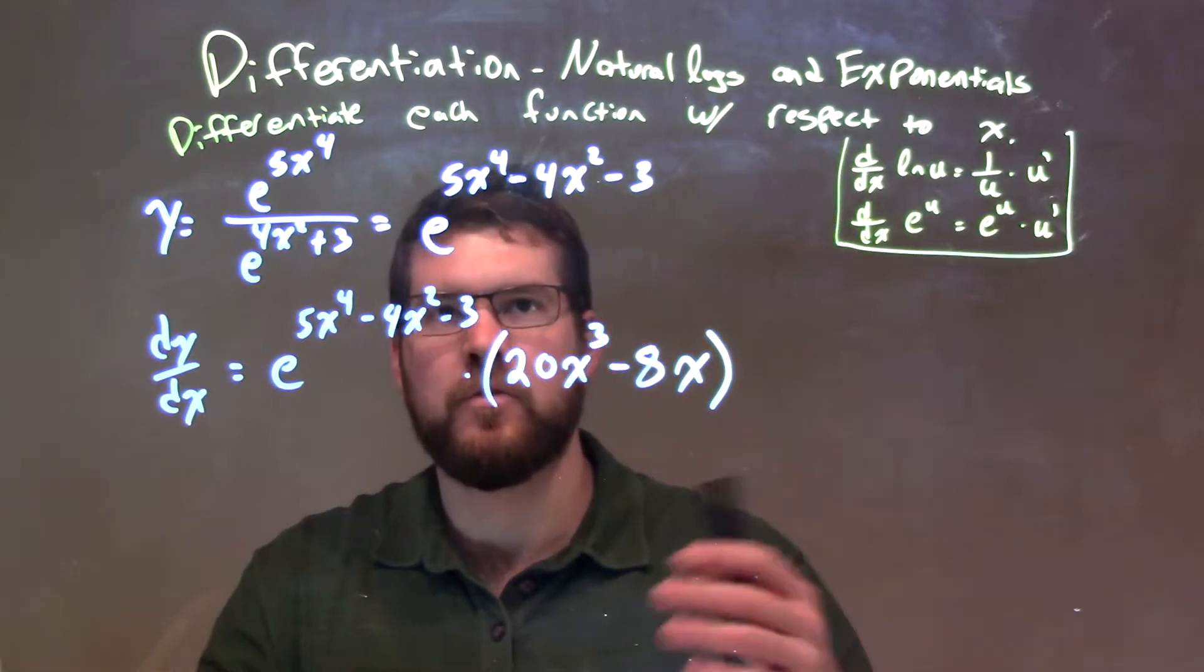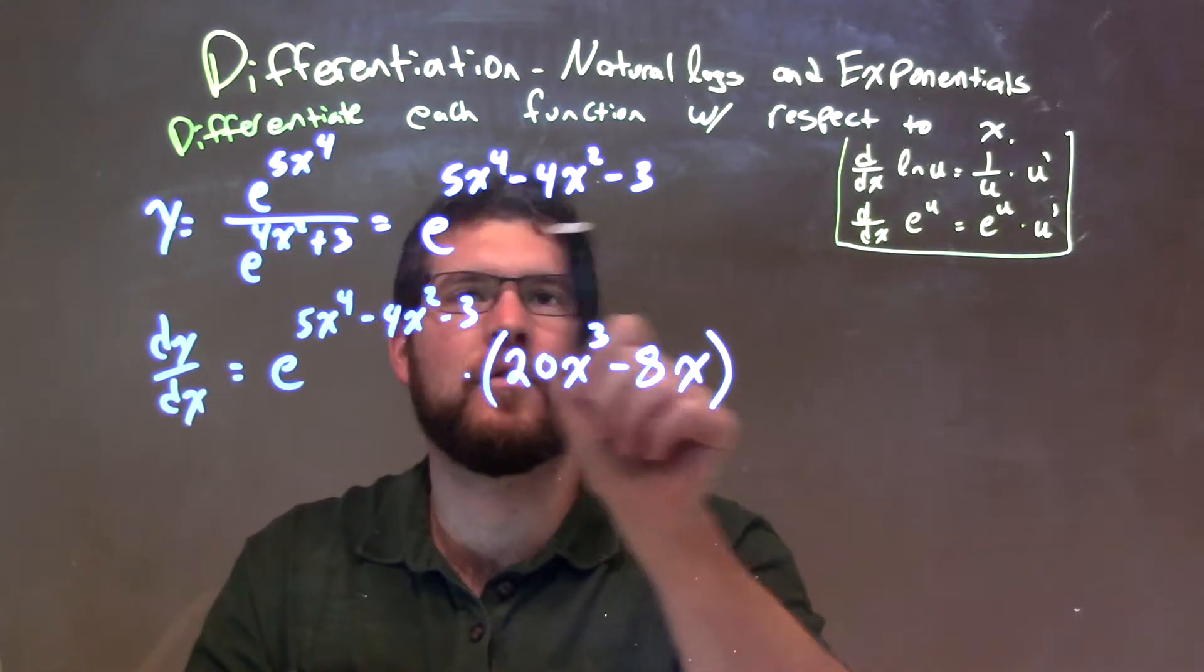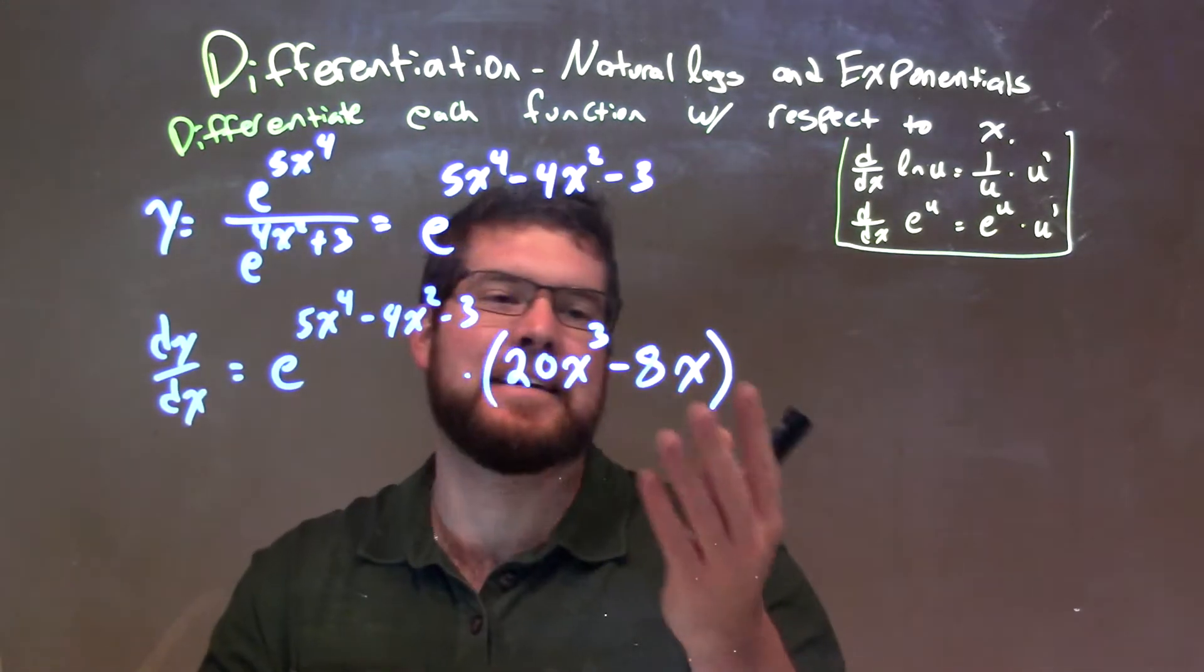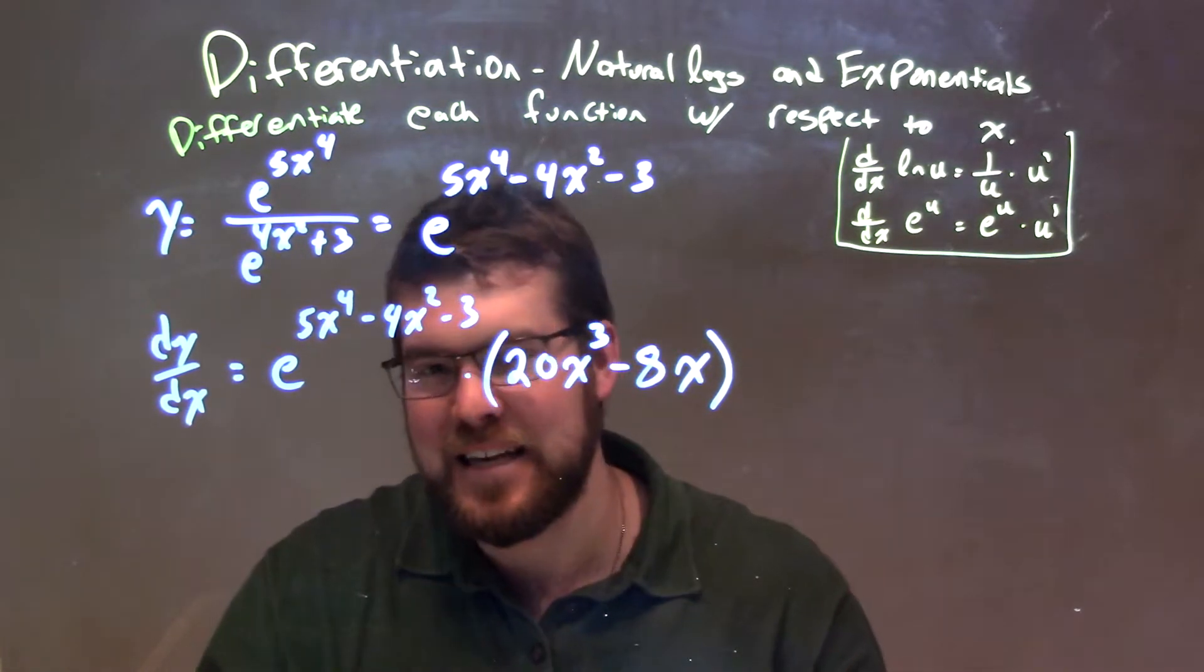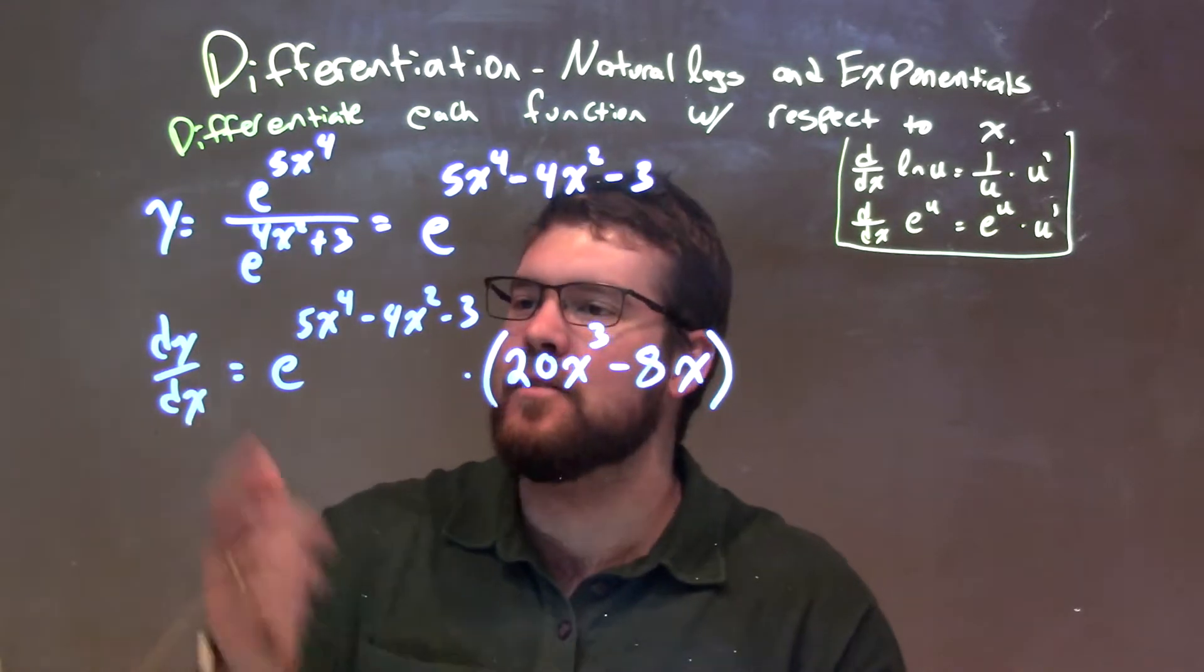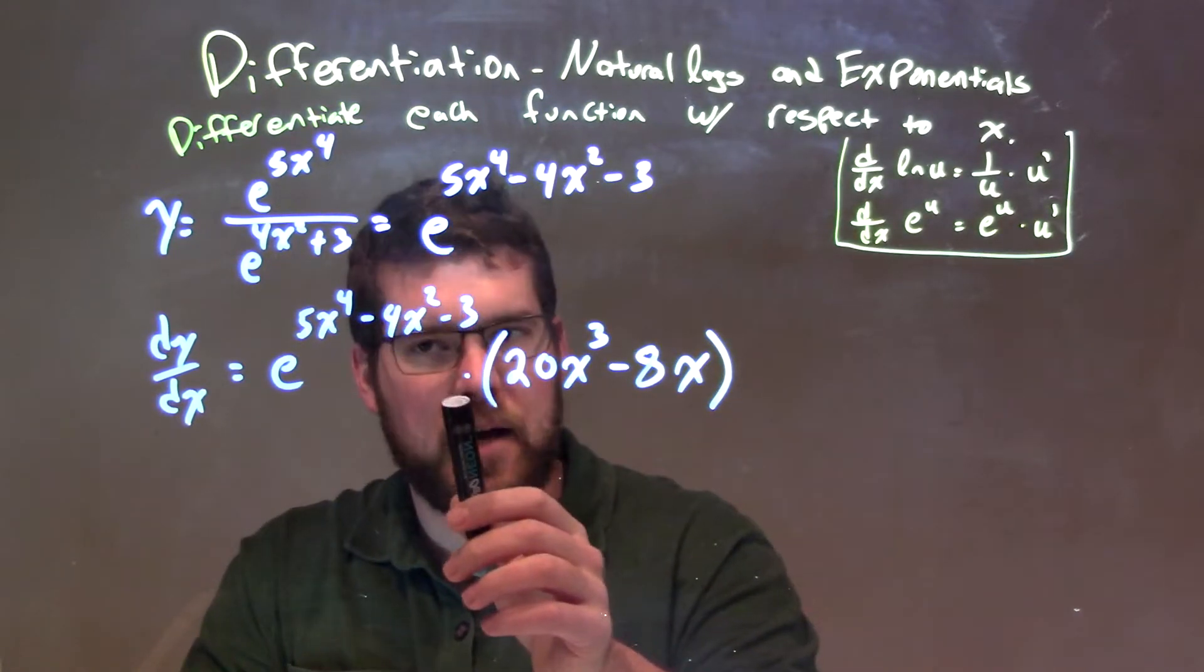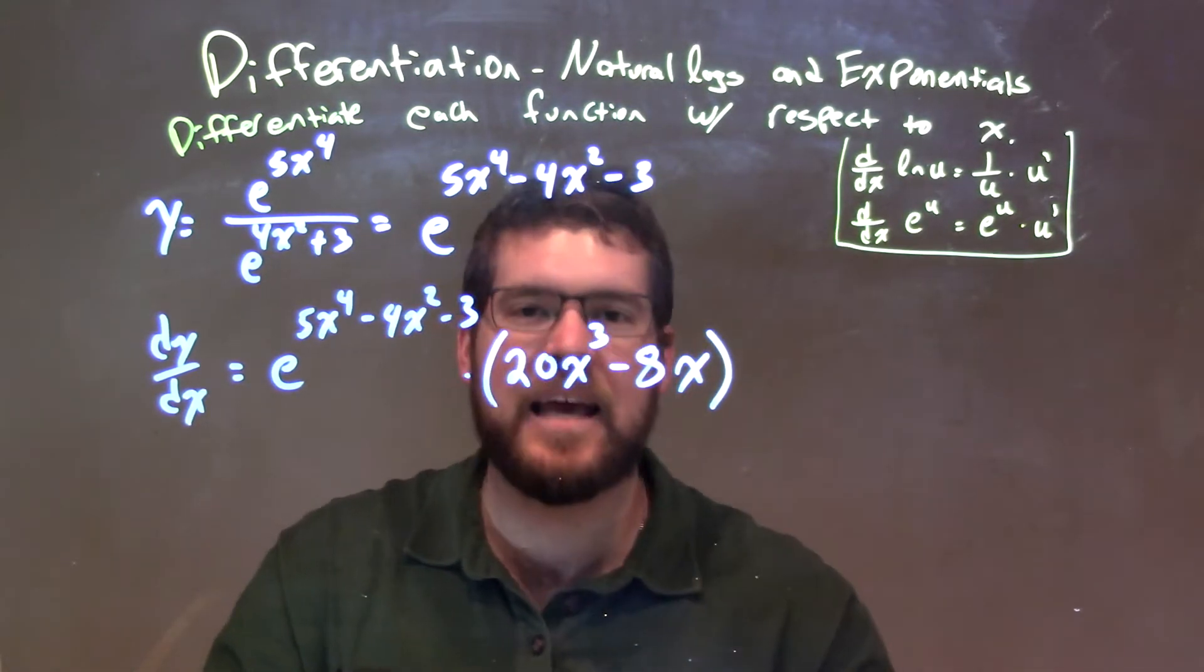Taking the derivative, derivative of e to the u is e to the u times u prime. So we keep it being the same. The derivative of our exponent was just 20x to the 3rd minus 8x. You can simplify this maybe a little more, factor out 4x and put it out front. I don't think it really makes it any nicer and neater, but you could. Either way, our final answer here is dy/dx equals e to the 5x to the 4th minus 4x squared minus 3 times 20x to the 3rd minus 8x.